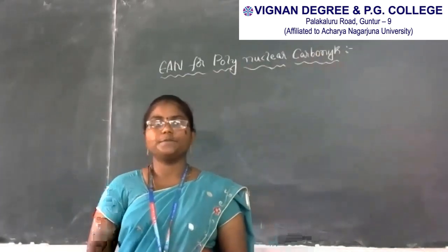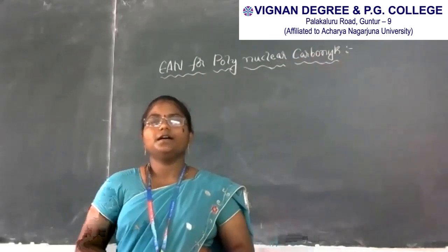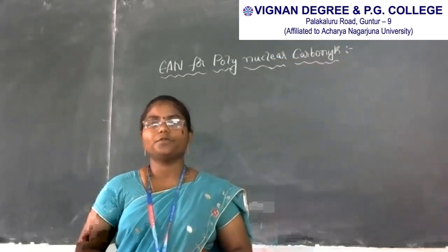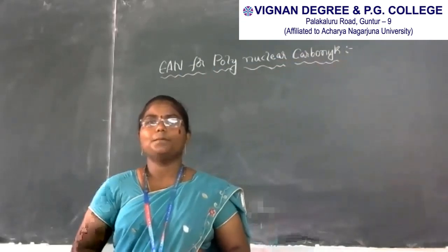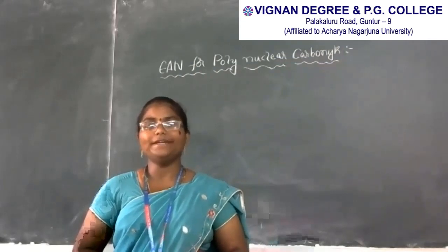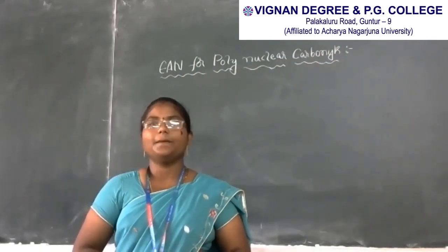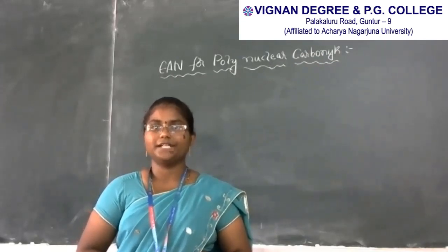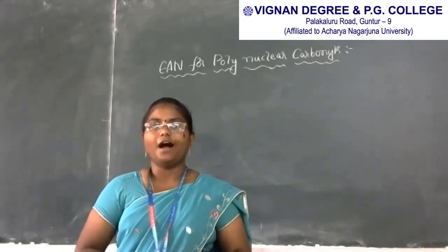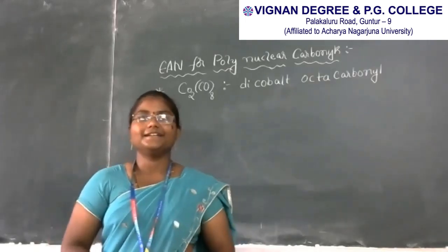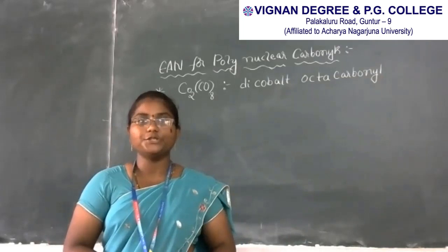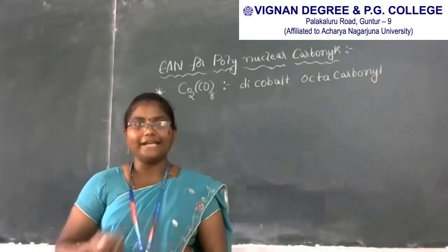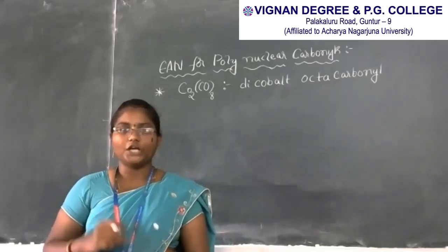In this class we also discussed about polynuclear carbonyls. Polynuclear carbonyls are those in which CO ligands are attached to more than one metal atom. We take the example of dicobalt octacarbonyl for polynuclear carbonyls, where CO ligands are attached to two cobalt metal atoms.